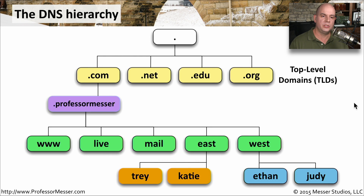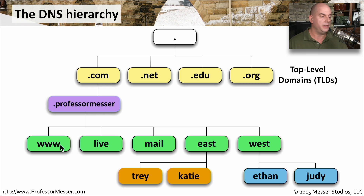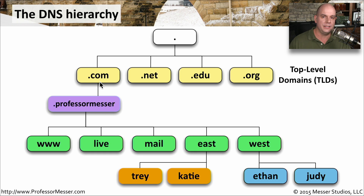Here's a diagram that shows top-level domains, like the .com and the .nets. They're right here at the top. The very top is the root, and then we work down from there. So you can see under .com, for instance, is a Professor Messer domain for professormesser.com. And on my site, I might have a www server for the web server, I might have a mail.professormesser.com. There might be an east and a west side. For instance, there could be an Ethan server that's in the west under professormesser.com, and that would be ethan.west.professormesser.com, and you can even keep going with this hierarchy.